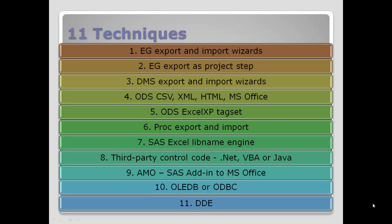Number seven is the SAS Excel LibName engine. Number eight is using third-party control code — that is not using SAS or Excel, but using a third-party programming language, which could be .NET or Java, to actually read information from SAS and push it out to Excel. The ninth is AMO, or the SAS add-in to Microsoft Office. The tenth is using OLADB or ODBC — that's reading from Excel, using those techniques to pull information into Excel rather than SAS pushing it out. And the eleventh technique is DDE, or Dynamic Data Exchange.